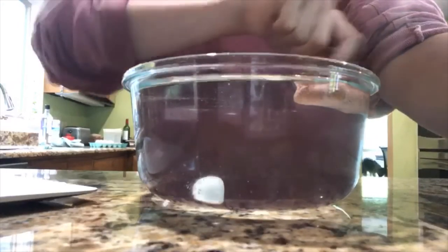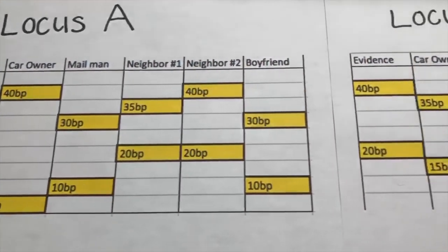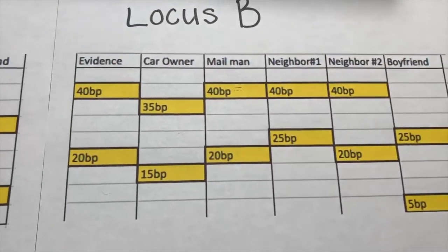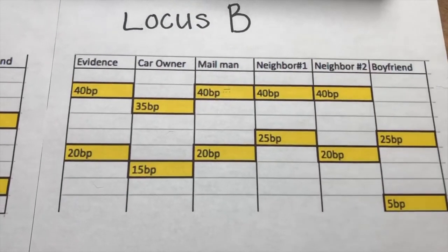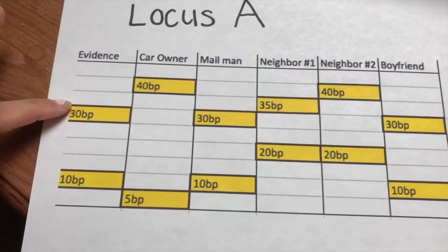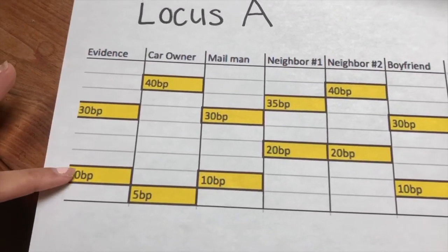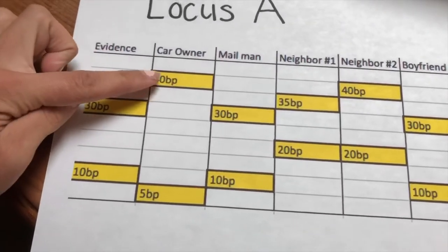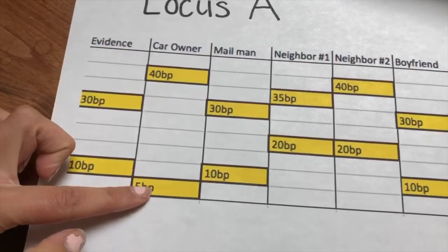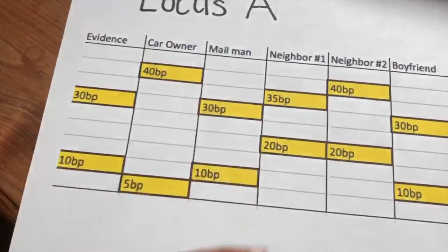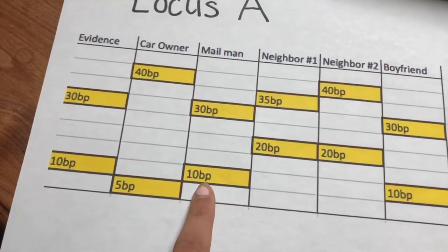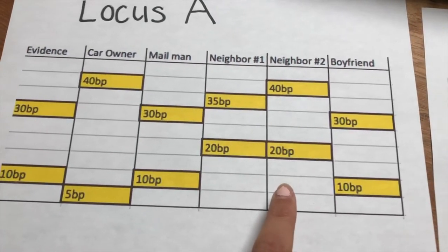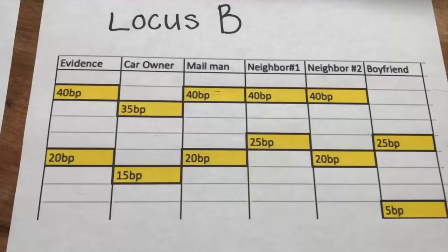Here are our results from the tests. We tested the alleles from each subject, the car owner, and the evidence at locus A and locus B on separate gels. The fragments were labeled with their respective lengths in base pairs. Beginning with locus A, we see the evidence has two fragments: one that is 30 base pairs and one that is 10 base pairs long. Now we look at our suspects to see who can match at this locus. Anyone that does not can be excluded as the criminal. The car owner has two fragments that are 40 and 5 base pairs, which are much farther apart than the evidence, so she cannot be the person who left the evidence. The same can be said for both of the neighbors. We find that two people match: the mailman and the boyfriend.